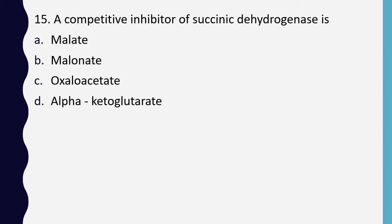Question 15. A competitive inhibitor of succinic dehydrogenase is: malate, malonate, oxaloacetate, or alpha-ketoglutarate. Correct answer is option B: malonate.